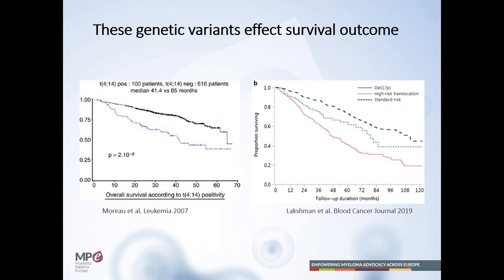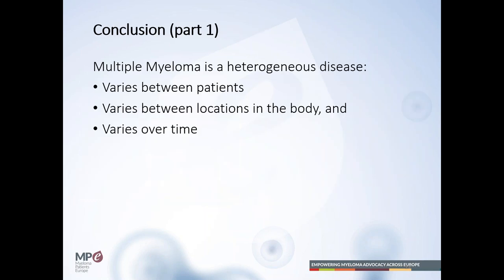Translocation 4-14 is one of the chromosomal aberrations conferring a poorer prognosis — patients with this translocation succumb to disease earlier than those without it. Similarly, patients with deletion 17p have a poorer prognosis than those without it. Overall, multiple myeloma is a truly heterogeneous disease: it varies between patients, between locations in the body, and over time — also due to chemotherapy.